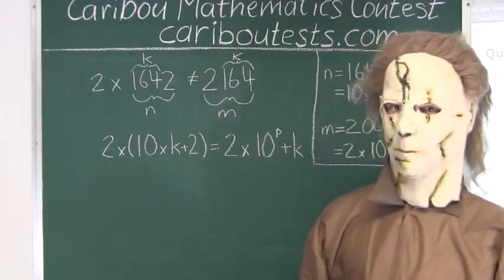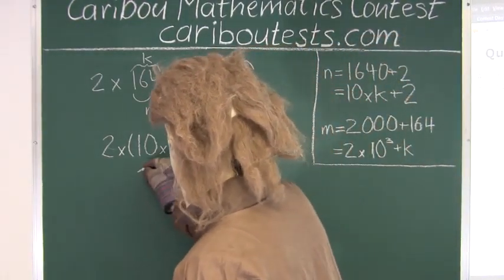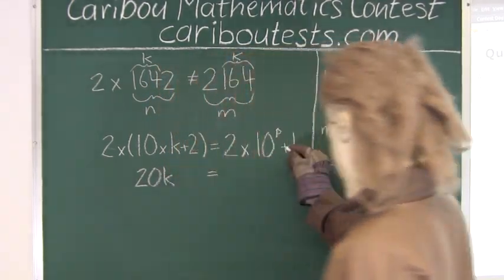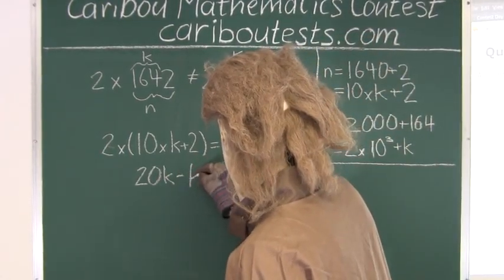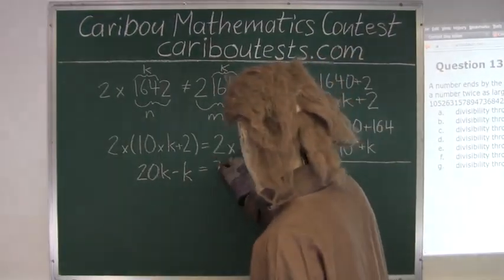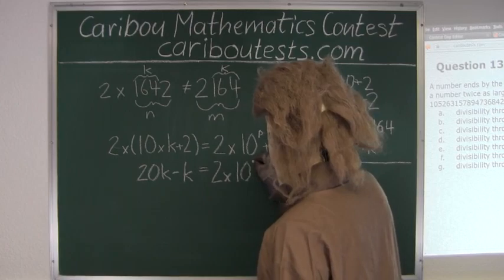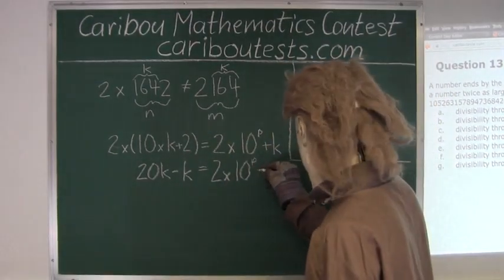So now we only want k on one side. We have 2 times 10, which is 20, times k is 20k. Then we have k, so minus k, putting it on this side. And then we're rewriting this. And then here we have 2 times 2, which is 4. Putting it on this side is negative 4.